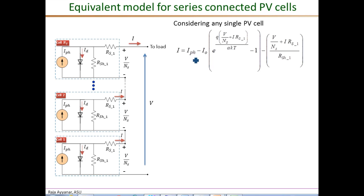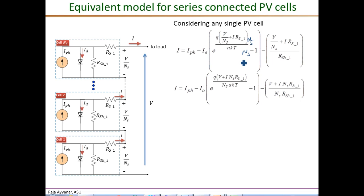This is the same circuit and current equation for a single PV cell seen in the previous slide. To derive the equivalent model for the complete series-connected PV system, we manipulate this expression by multiplying and dividing the exponential term by NS. This cancels one NS, making the series resistance term I times NS times RS1. The same operation is applied to the shunt current term.